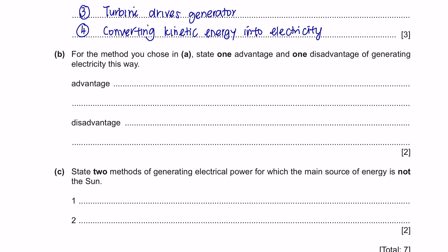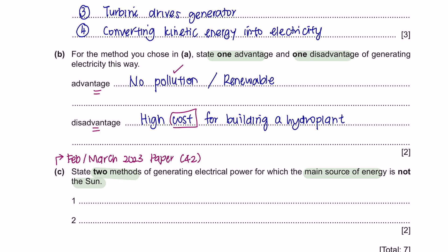Question B. For the method you choose in A, state 1 advantage and 1 disadvantage of generating electricity this way. This is pretty simple. The advantage of using energy stored in water: No pollution is caused from this method. And also, water is a renewable source of energy. And the disadvantage is that the cost of building this could be very expensive. Whenever you are asked about advantage, you can always talk about pollution. And disadvantage, you can always discuss about its cost. And there's a very high chance that these answers are always acceptable. Moving on to question C. State 2 methods of generating electrical power for which the main source of energy is not the sun. This was an exact question that came out in your February-March 2023 paper 4-2. So, you can see that questions are always repeating. Therefore, past questions are extremely helpful. There are 3 methods for this. You can use any of these 2 out of 3 methods.